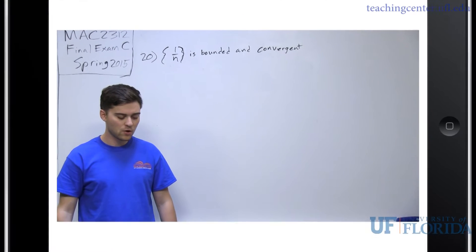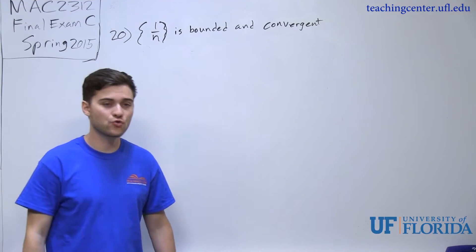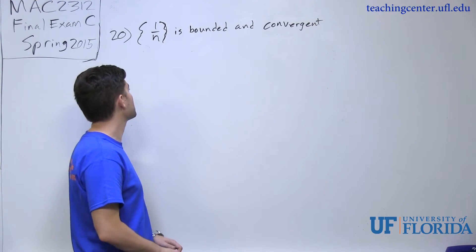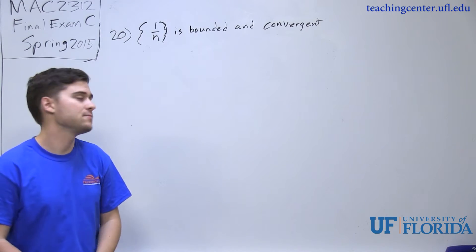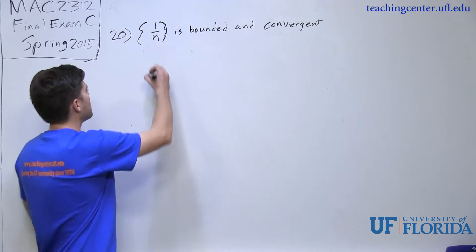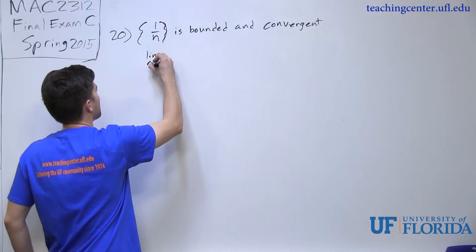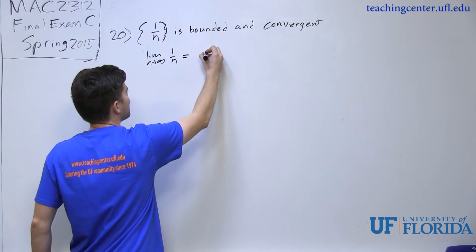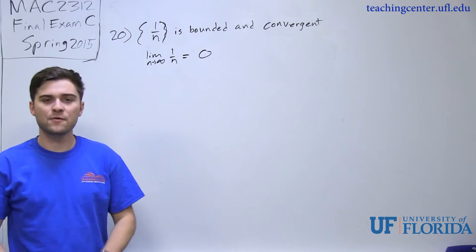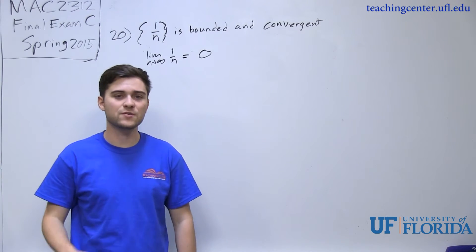Problem 20 is asking you to find which of the statements about sequences are true. So the first sequence statement written up here says that 1 over n is bounded and convergent. So if I look at the limit as n approaches infinity of 1 over n, it ends up going to 0 as n approaches infinity.